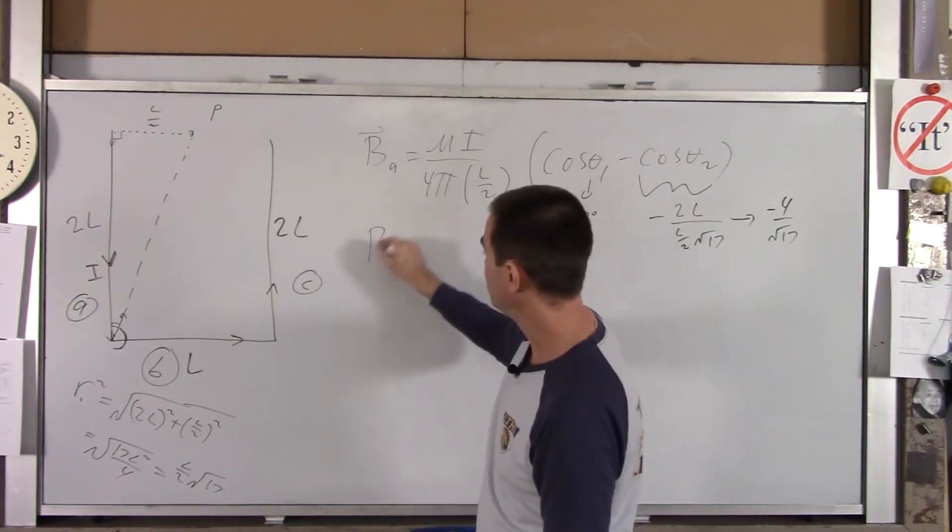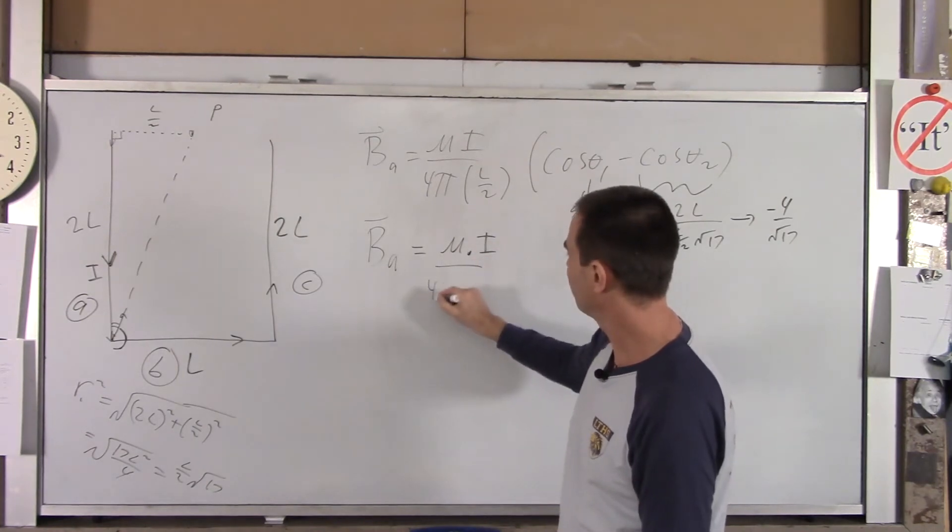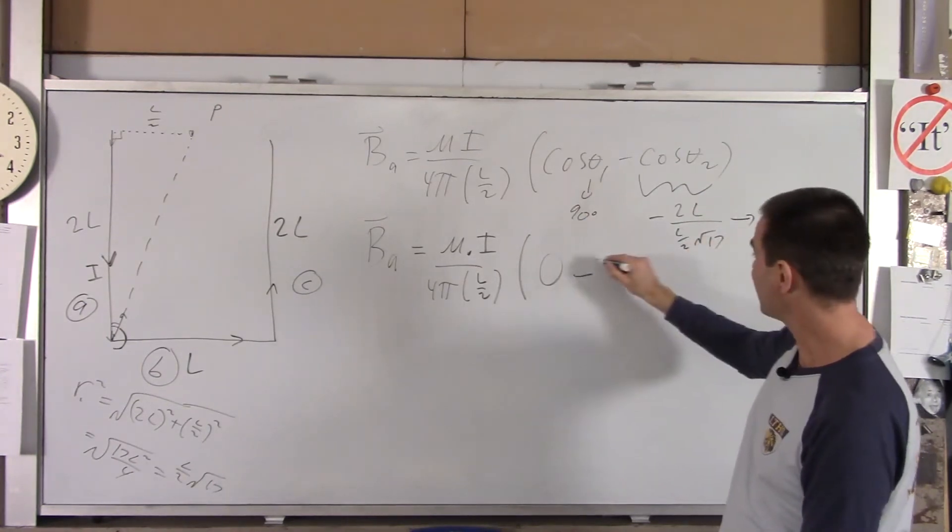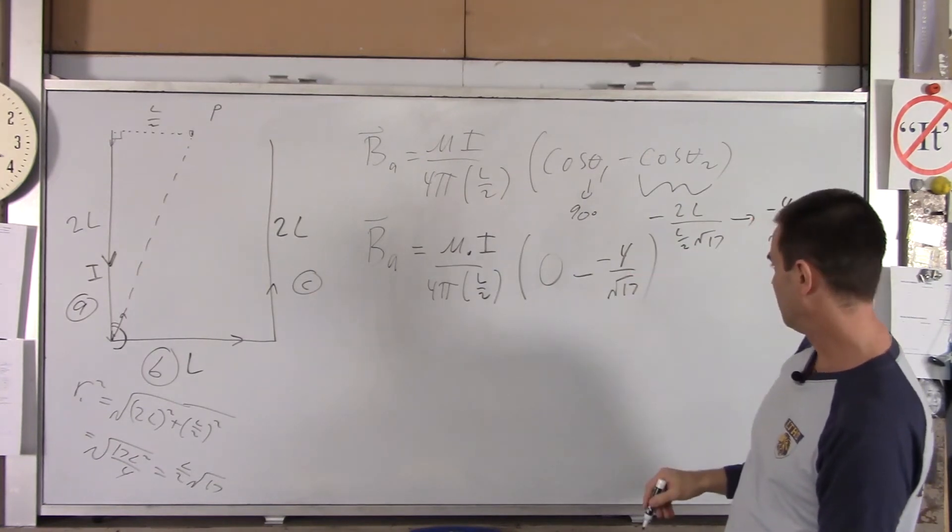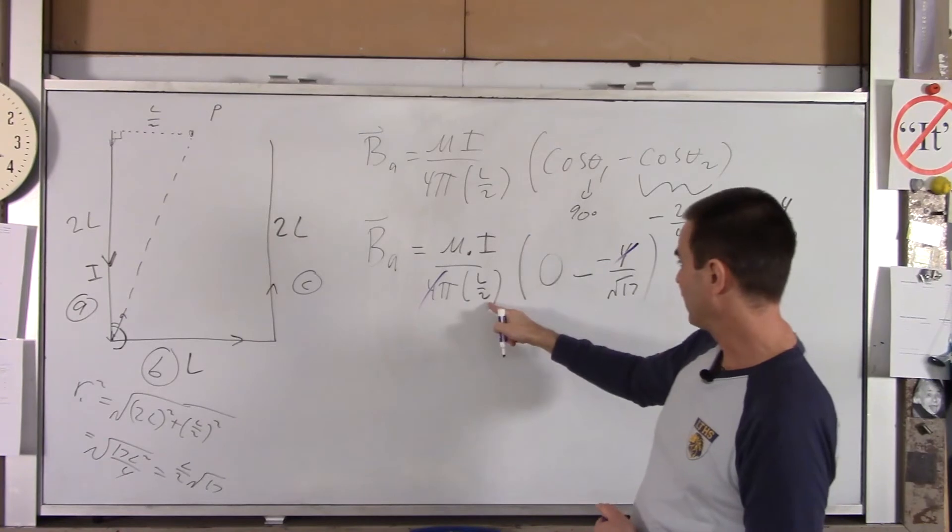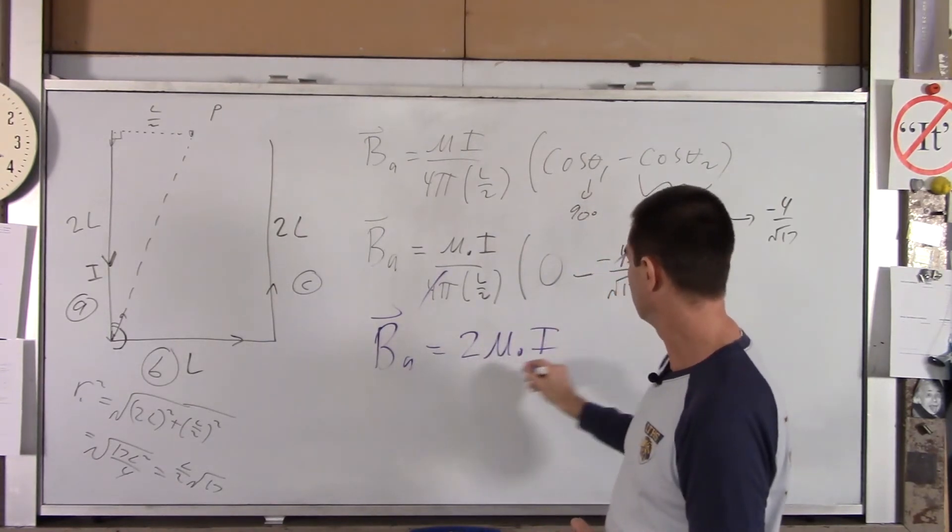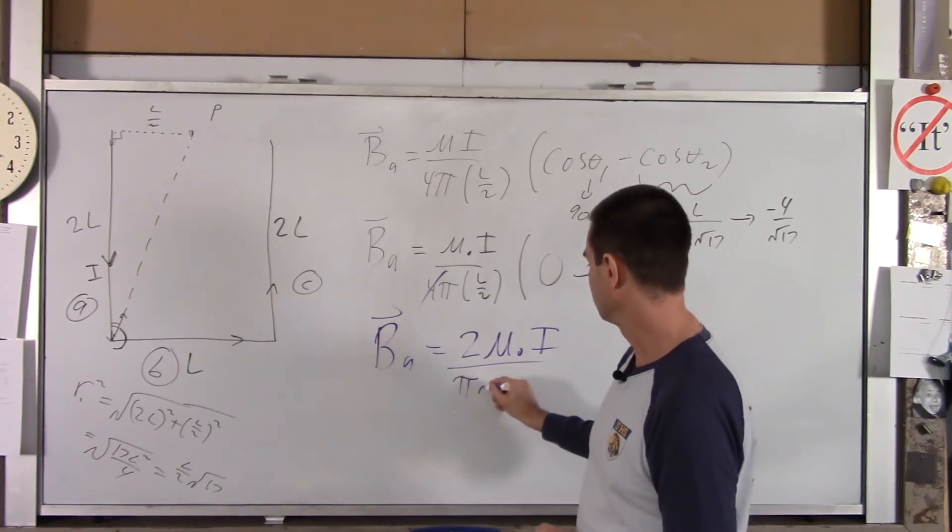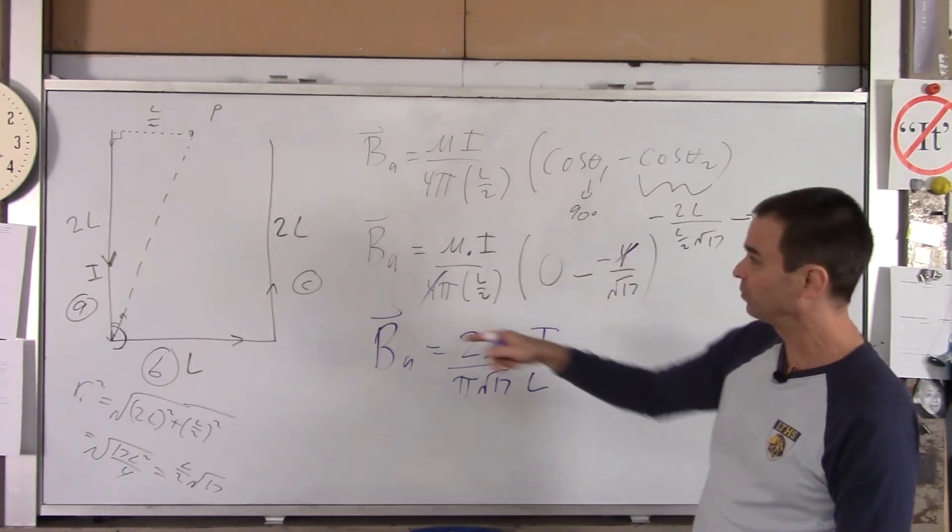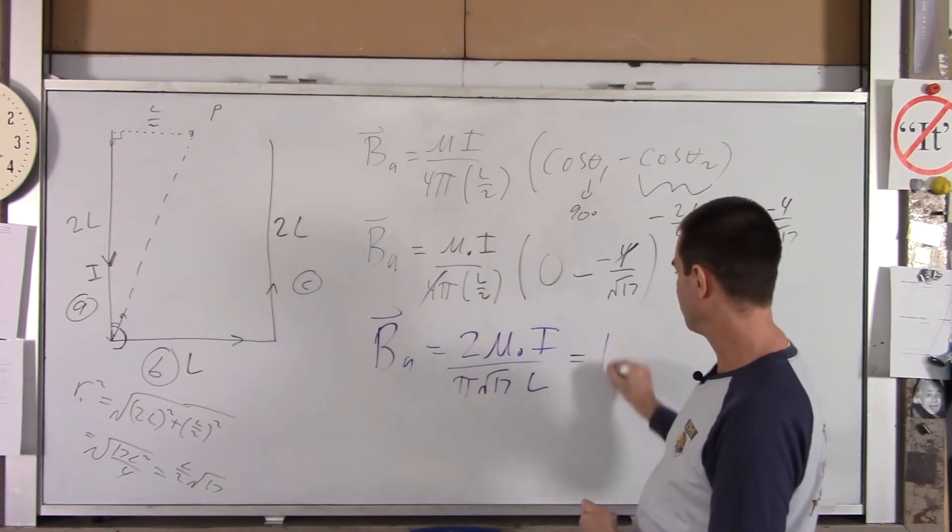So what we have left is B sub A equals, and now we're mostly in math class at this point. We got mu naught I over 4 pi L over 2 times cosine of the first angle 0 minus negative 4 over root 17. Now we can do a little more canceling here. So that 4 and that 4 drop out. That 2 goes to the numerator. And you get BA equals 2 mu naught I over pi root 17, and there's still an L down there. So that is the magnetic field created by just segment A, which is also going to equal the magnetic field created by segment C.